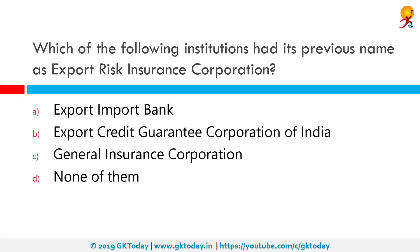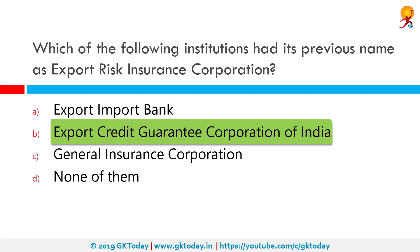Which of the following institutions had its previous name as Export Risk Insurance Corporation? The correct answer is Export Credit Guarantee Corporation of India. ECGC Limited, formerly Export Credit Guarantee Corporation of India, is a company wholly owned by the Government of India, based in Mumbai, Maharashtra. It provides export credit insurance and support to Indian exporters and is controlled by the Ministry of Commerce. The Government of India initially set up the Export Risk Insurance Corporation in July 1957. It was transformed into Export Credit and Guarantee Corporation Limited in 1964, and finally to Export Credit Guarantee Corporation of India in 1983.